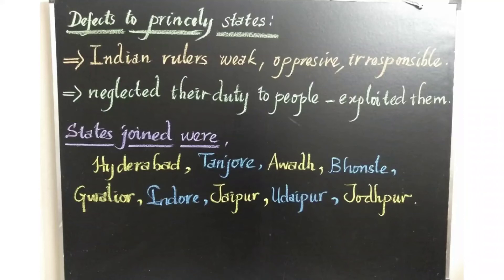Let us see which Indian rulers joined under the Subsidiary Alliance system. The first state to join was Hyderabad in 1798, followed by Tanjore in 1799, Awadh in 1801, Peshwa in 1802, Bhonsle in 1803, Gwalior in 1804, Indore in 1817, and Jaipur, Udaipur, and Jodhpur in 1818. This many states joined under the Subsidiary Alliance without worrying about their people or their responsibilities. These kings were very luxurious in their life — selfish and irresponsible — and it led to the kingdoms completely surrendering under the British.